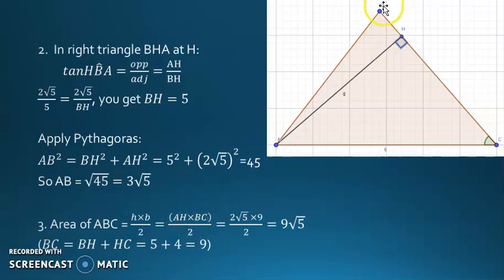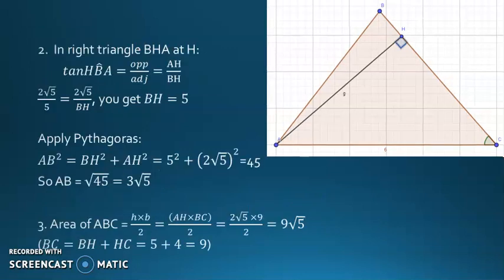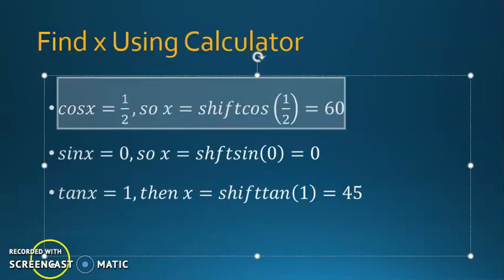AH is 2√5 from part one. For BC: we have BH equals 5 from part two and HC equals 4 from part one, so BC equals 9 cm. Replace these values and you'll get the area of triangle ABC.